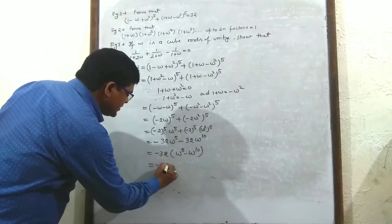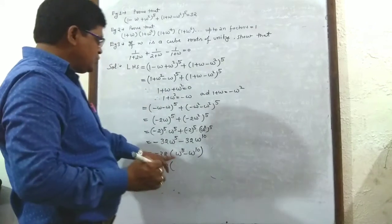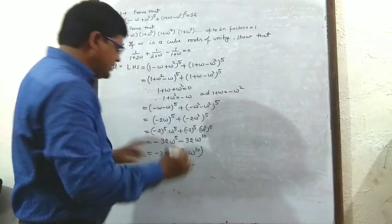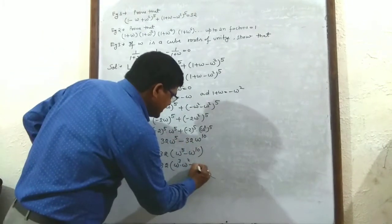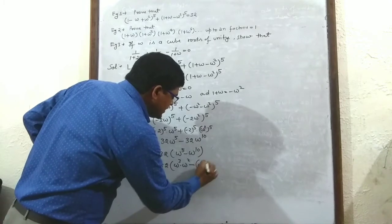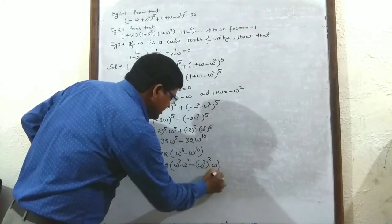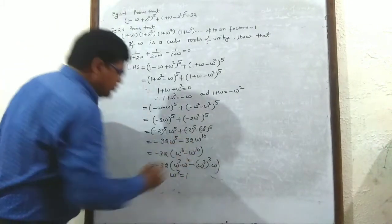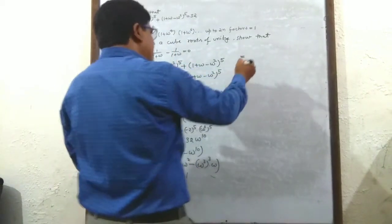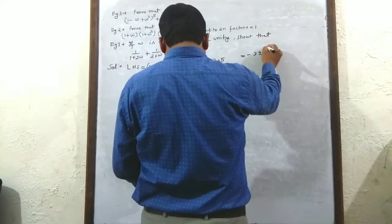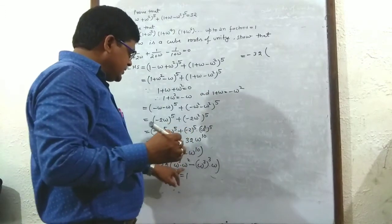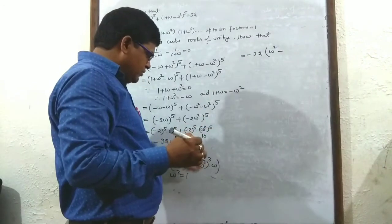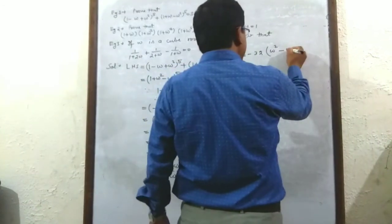Now ω⁵ = ω³·ω² and ω¹⁰ = (ω³)³·ω. Since ω³ = 1, this gives ω⁵ = ω² and ω¹⁰ = ω. So: -32(ω² + ω). We know 1 + ω + ω² = 0, therefore ω + ω² = -1.